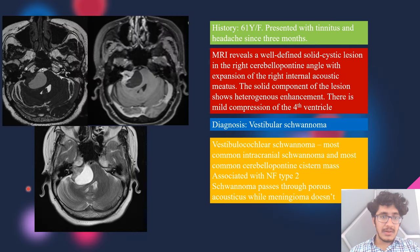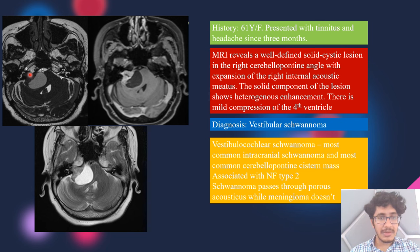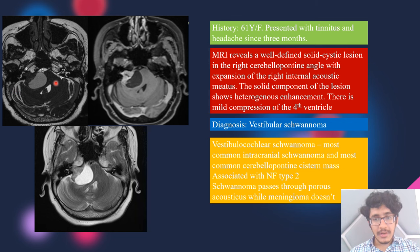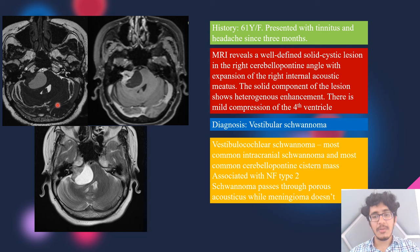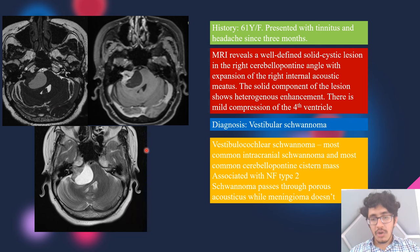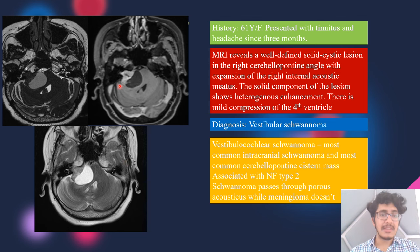A 61-year-old woman presented with tinnitus and headache. MRI revealed a solid-cystic lesion with heterogeneous enhancement of the solid component, causing expansion of the internal auditory canal. This was vestibular schwannoma, the most common intracranial tumor and most common cerebellopontine angle mass, associated with NF type 2. Schwannomas pass through the porus acusticus, whereas meningiomas do not — a key differentiating feature for CPA lesions.